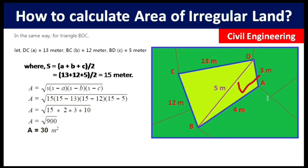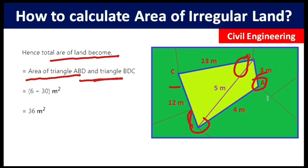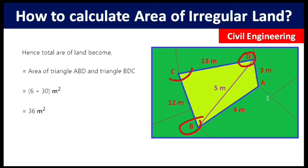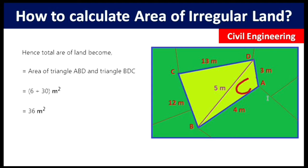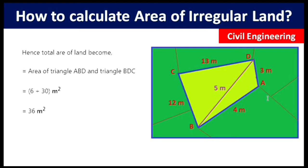Now we add both areas to get the total area of the land. Area of triangle ABD = 6 m², and area of triangle BDC = 30 m². Adding both: total area of the irregular land = 36 square meters.